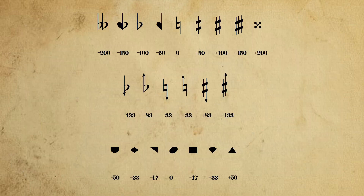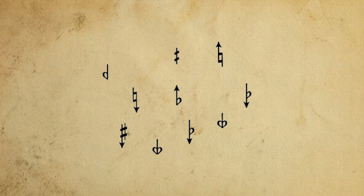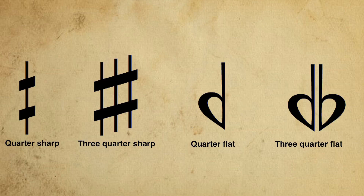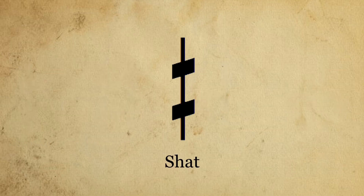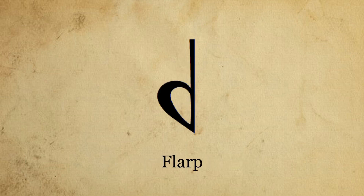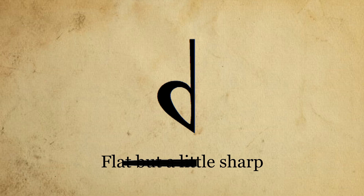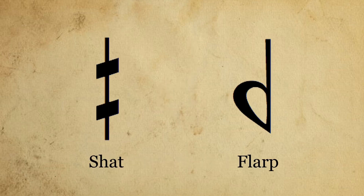You can notate microtones in many different ways, so we'll only cover the ones we use. We wanted monosyllabic words to describe the new pitch deviations, so we came up with new words we thought were the most fitting. Shad: if you want to go in the sharp direction, just a little flatter. Florp: if you want to go in the flat direction, just a little sharper. We use these accidentals in 24 and 31TET to move a note up or down by a quarter or a fifth tone respectively.